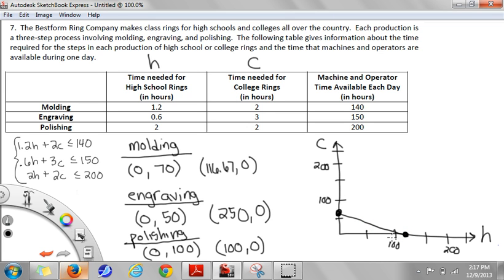I'll go ahead and do my shading as well. And if I plug in 0,0 as a test point, then I end up with an inequality that reads 0 is less than or equal to 140, which is true. So I'll shade the underside.